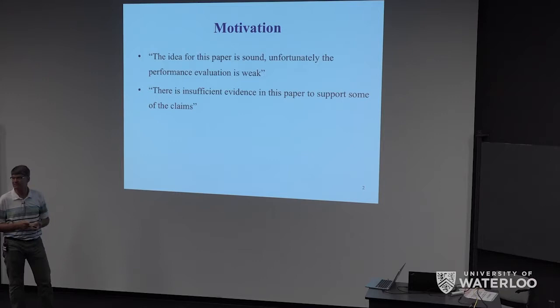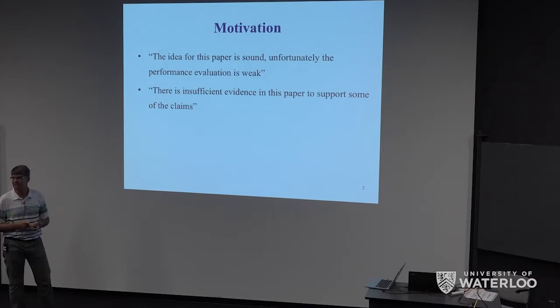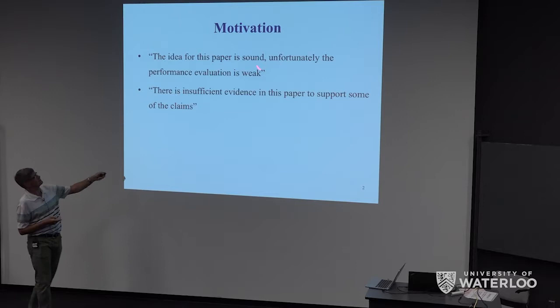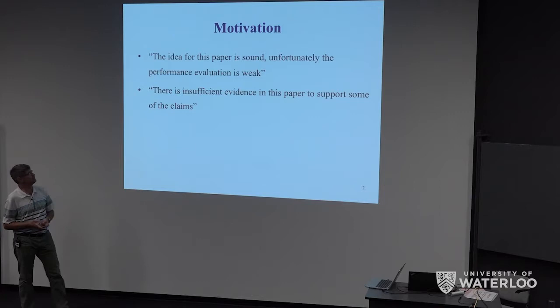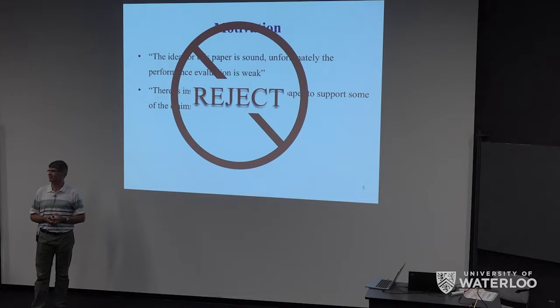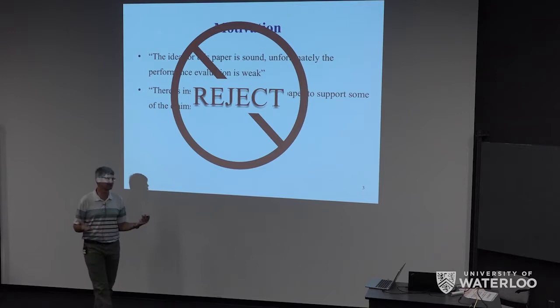So you might get a review back from a paper that's been submitted and the review might look like this: the idea for this paper is sound but unfortunately the performance evaluation is weak, or there's insufficient evidence in this paper to support some of the claims. And as a result the paper gets rejected. This is a pretty common thing and as a reviewer of many papers I will reject papers based on some of these issues.